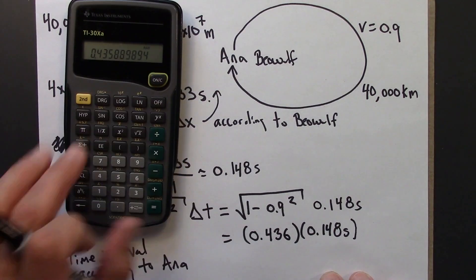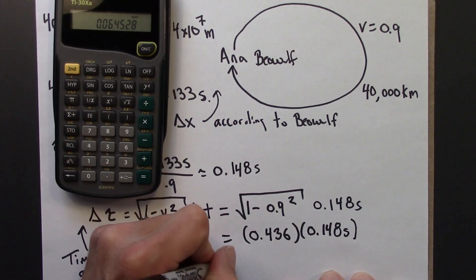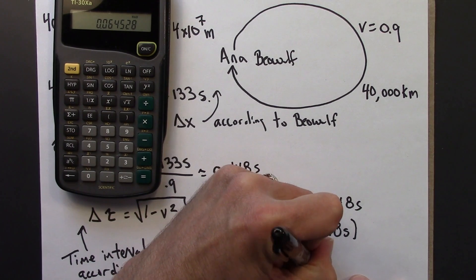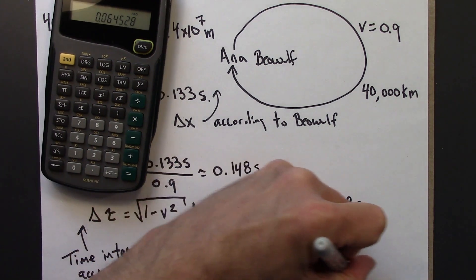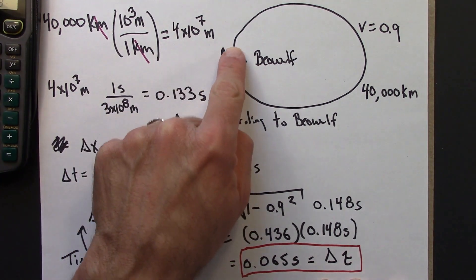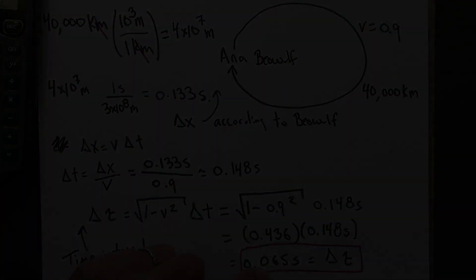Let's multiply these numbers together to get our final answer. 0.436 times 0.148, and I get 0.065 seconds. That's my delta tau. This is the time that Ana experiences. If Ana says I depart at time 0, zips around the earth, and the moment of her return, her clock is going to show that 0.065 seconds have elapsed, whereas Beowulf would disagree and say 0.148 seconds has elapsed. A longer time for Beowulf than for Ana. This is an example showing you how we can use this formula to figure out the proper time.